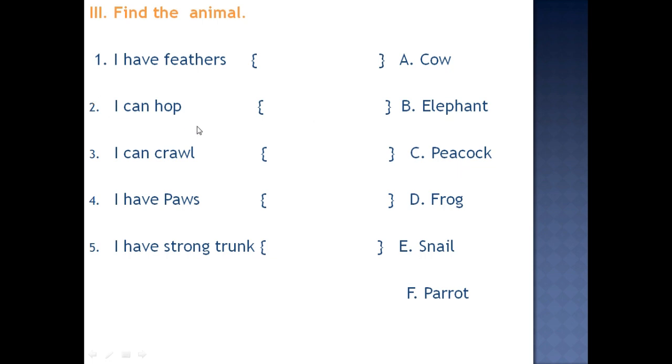Very good. I can hop. Which animal can hop? We already discussed in the Poonam's day out. Right? In the animals. Some animals can hop. Some animals can crawl. Some animals can fly. Remember kids? So here snail is there. So you have to match this snail. I have paws. I have strong trunk. So which animal will have trunk? Trunk means trunk. Trunk, which one has it? Yes, elephant. Very good.